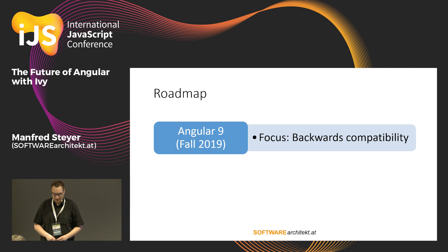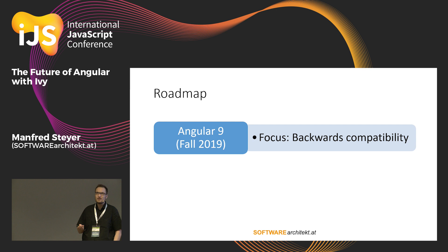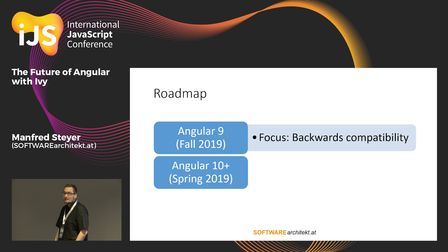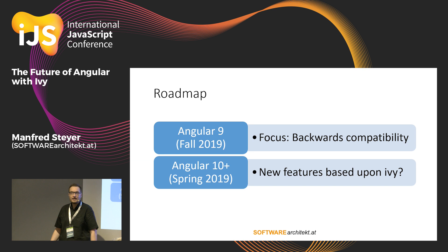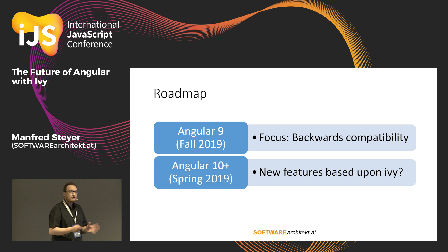What is the roadmap? With Angular 9 in some weeks, we will get Ivy by default, and the focus here is on backwards compatibility — they are trying really hard to make everything work that worked before. Then beginning with Angular 10, hopefully there will be new features based upon Ivy. Ivy has been designed with a lot of new features in mind, but the plan is: first it has to land, it has to be backwards compatible, and then the team will sit together and talk about what the next steps are and what they can do to leverage Ivy for new features.